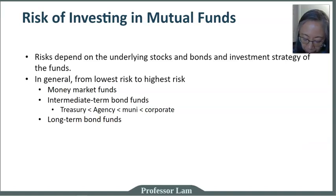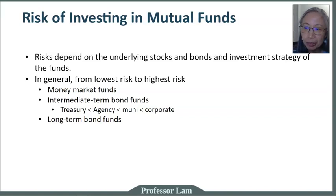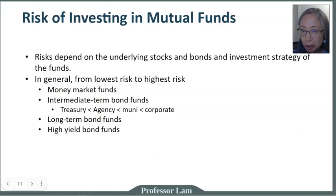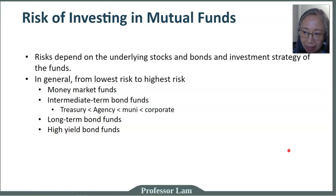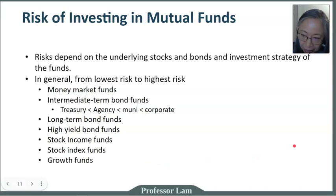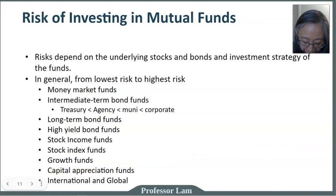Treasuries will have the lowest risk. High-yield bond funds invest in bonds that have very low bond ratings — these are speculative or junk bonds. Then we have stock income funds, stock index funds, growth funds, capital appreciation funds, and finally international funds.